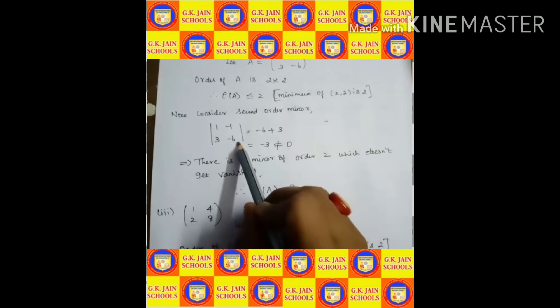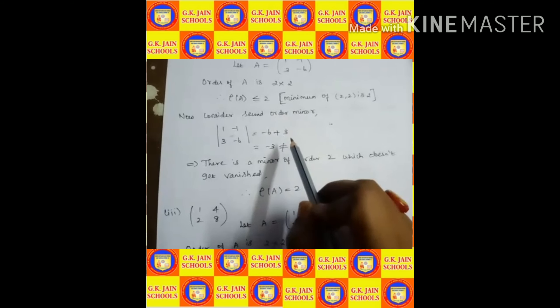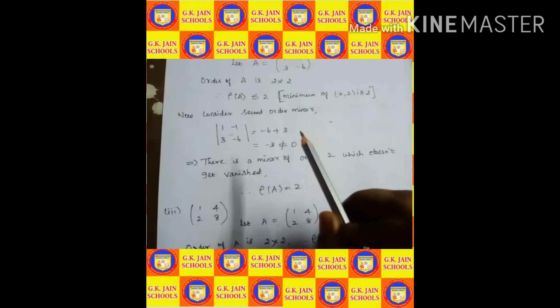Using the determinant method, I consider the second order minor: minus 6 times 1 is minus 6, and minus sign times minus 3 gives plus 3, so minus 6 plus 3 is minus 3, which is not equal to 0. Whenever the minor value is not becoming 0, it is not vanishing. Since there is a minor of order 2 which does not vanish, therefore rank of A is 2.